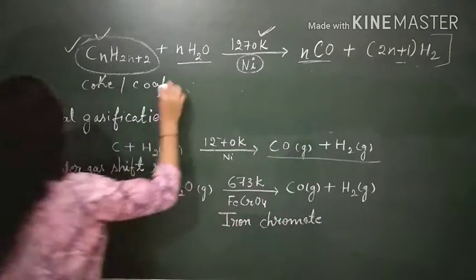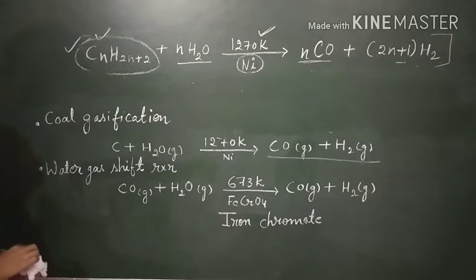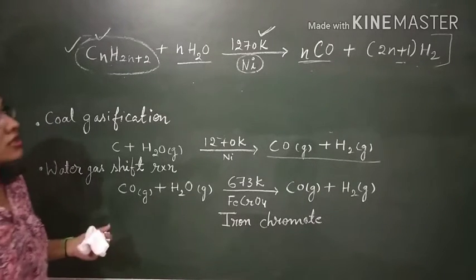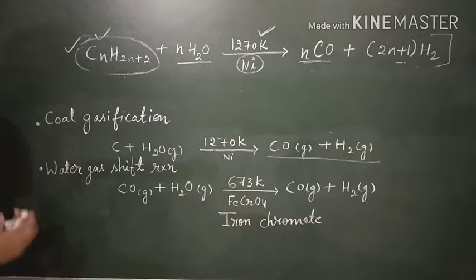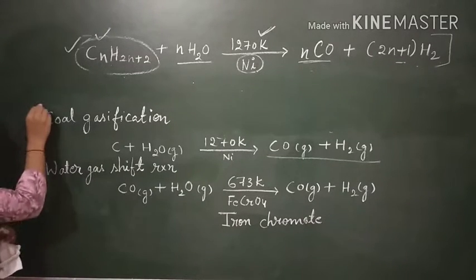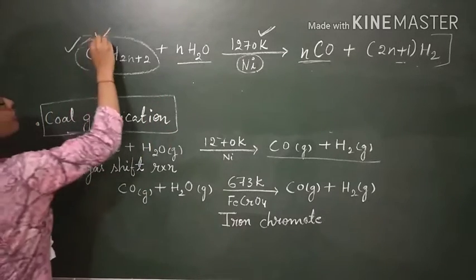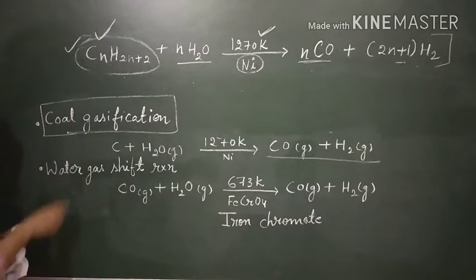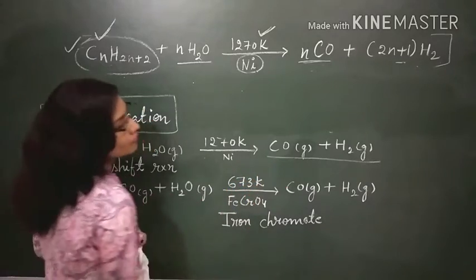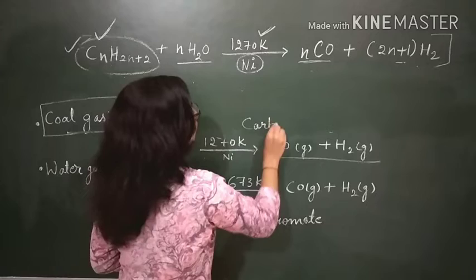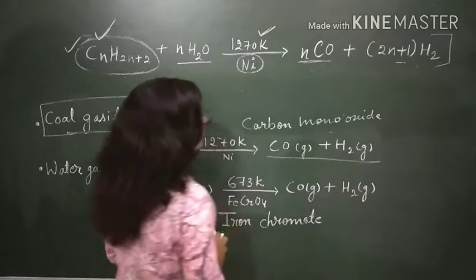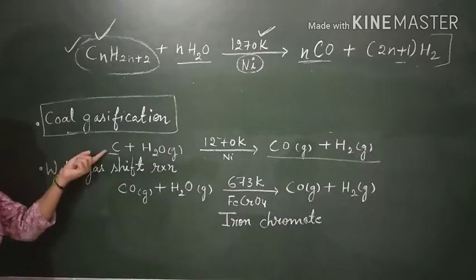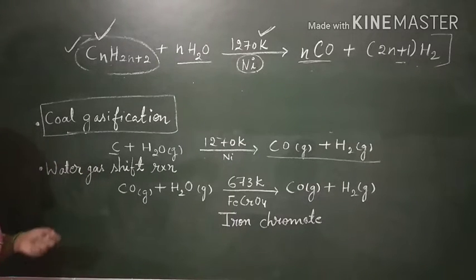When the reaction happens with coal or coke, the hydrocarbon is replaced by coal or coke: C plus H₂O under the same conditions gives CO plus H₂. This is carbon monoxide plus water. Whenever this reaction happens with coal and coke, it is called coal gasification.